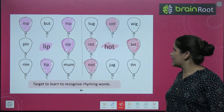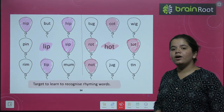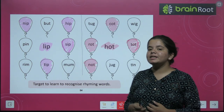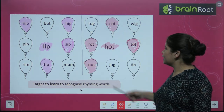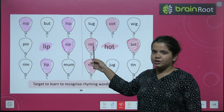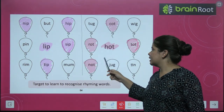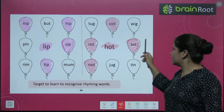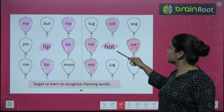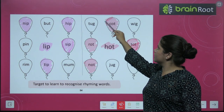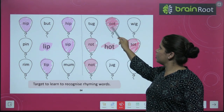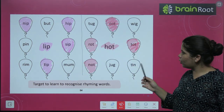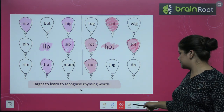Next word is H-O-T, hot. What can be the rhyming words of hot? R-O-T, rot. N-O-T, not. T-O-T, tot. C-O-T, cot. So you will beautifully color these.